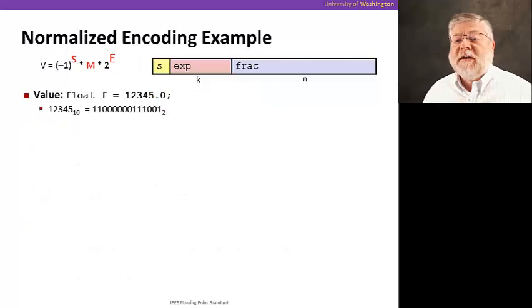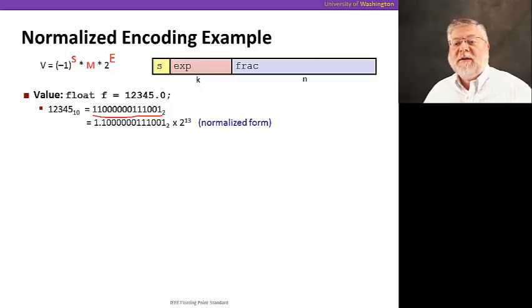Alright. So let's look at the floating point number twelve thousand three hundred forty-five point zero. Remember, that is that same old bit pattern for 12345. And now we have to normalize it. Put it in a form where the significant starts with one point. So the way we would do that is by moving that binary point thirteen positions over to be right after the leading one, and then we have an exponent of two to the thirteenth. So that's our normalized form.